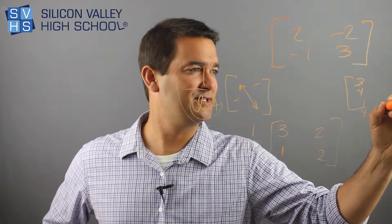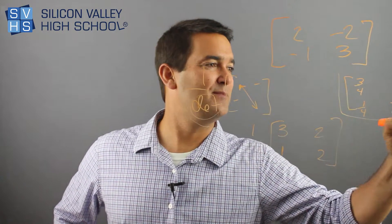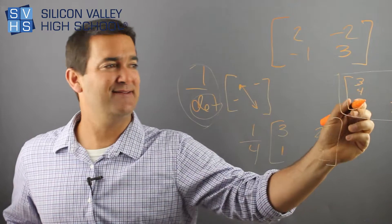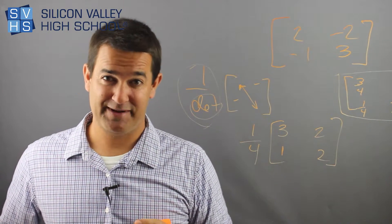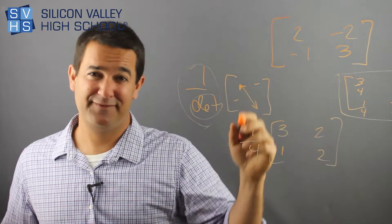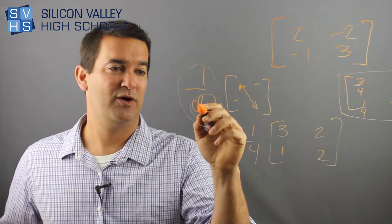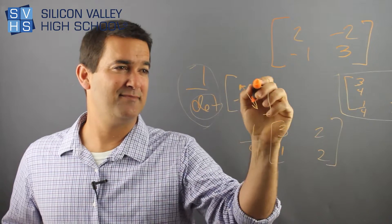1 over 4 times 2, 2 over 4 reduces to a half. This would be my answer. This is the inverse of this matrix, that 2 by 2 matrix. And again, you should write this little formula. Like if you have to do this in school, 1 over det times arrow minus minus.